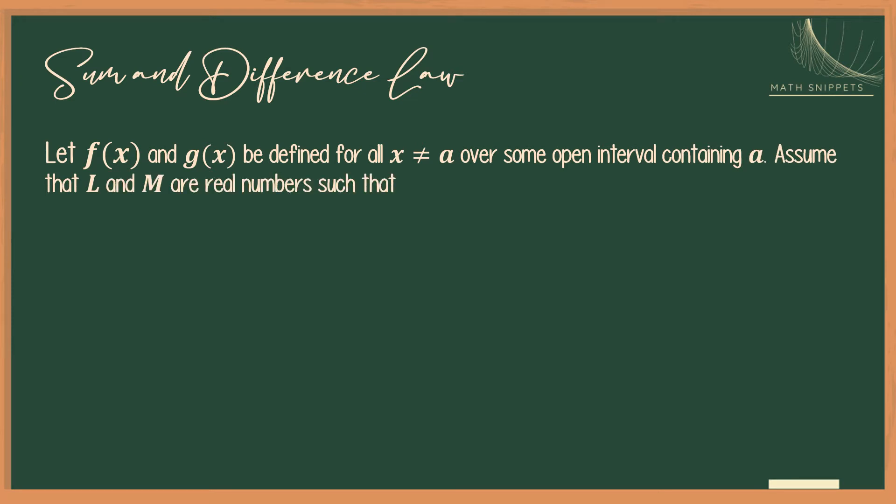Then we have, suppose we have L and M real numbers such that the limit of f as x approaches a is L and the limit of g(x) as x approaches a is M. So the limit of f plus or minus g is equal to L plus or minus M. Therefore, the limit of the sum is equal to the sum of the limits, or the limit of the difference is equal to the difference of the limits.